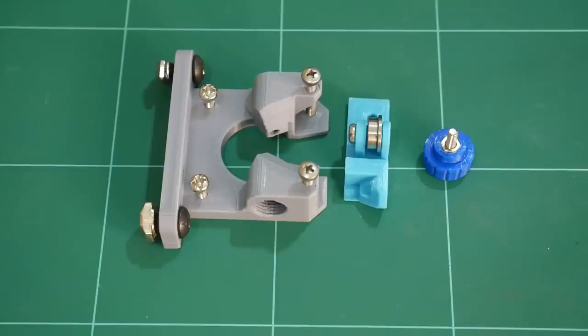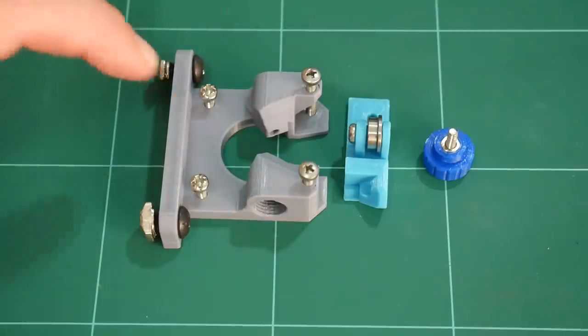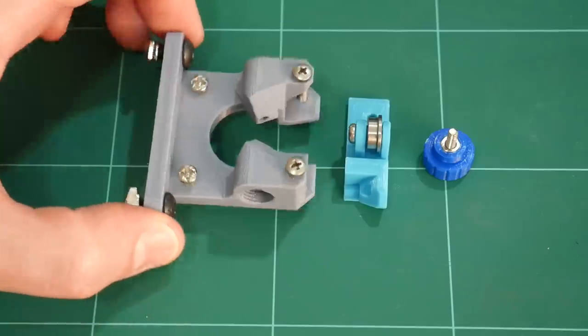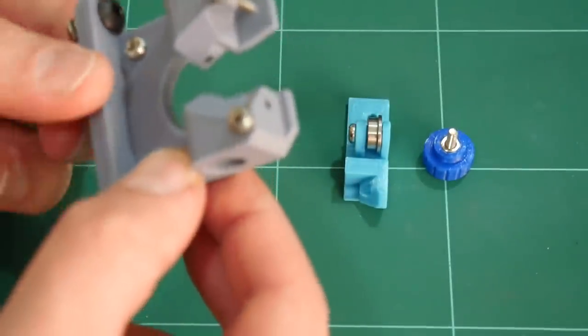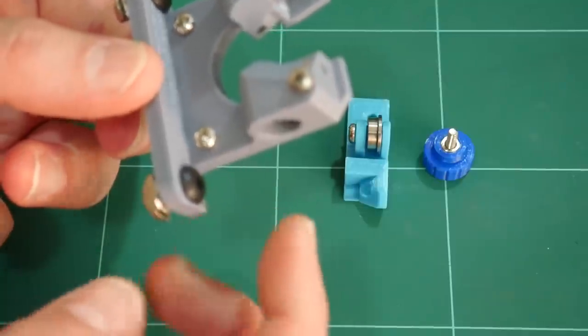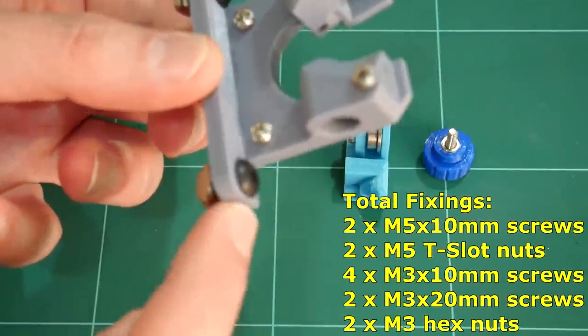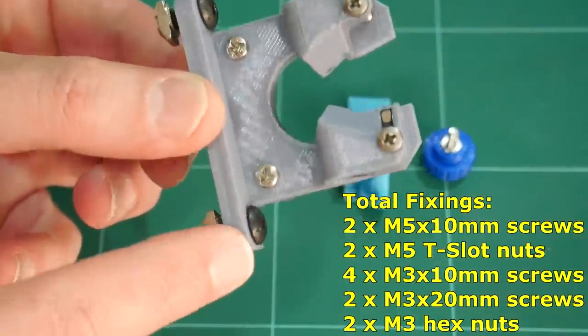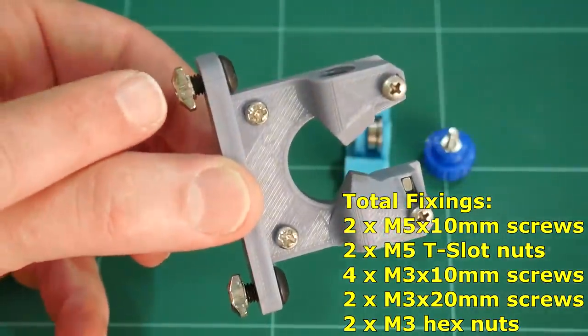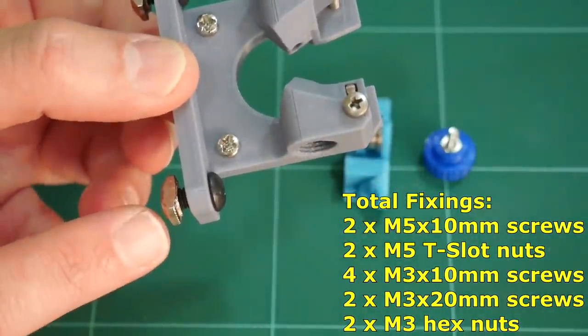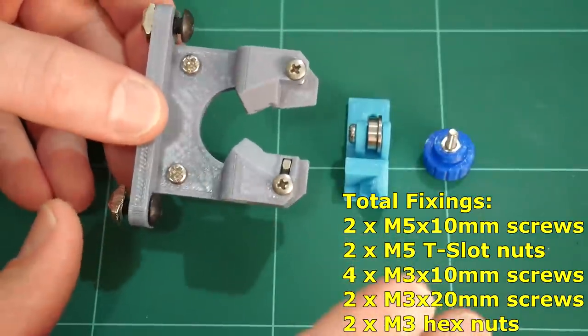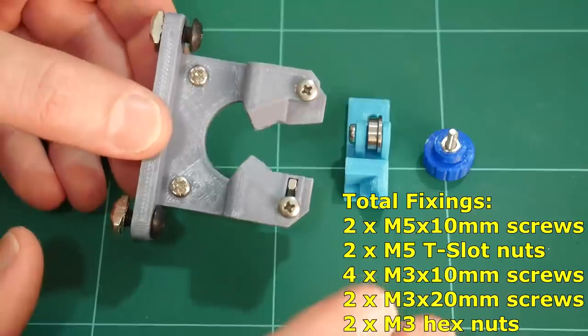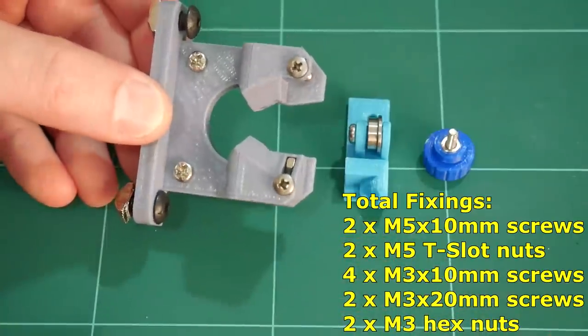But here are the fixings you're going to need to actually assemble and print this particular new system. Starting with the Bowden motor mount, you're going to need, for fixing to 20-20 aluminium extrusion, two M5 by 10 millimetre screws and two M5 hammer nuts or T-nuts. All these parts, by the way, are the exact same parts that exist in the Hypercube set and you should have plenty of these spare. You shouldn't need to go out and buy anything.